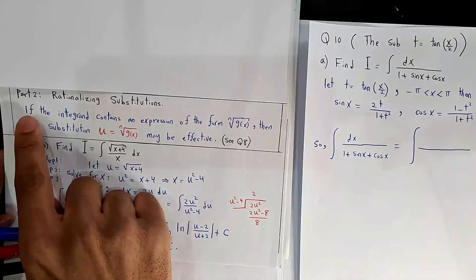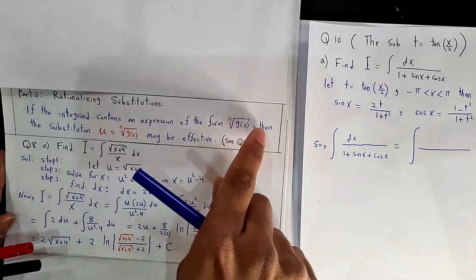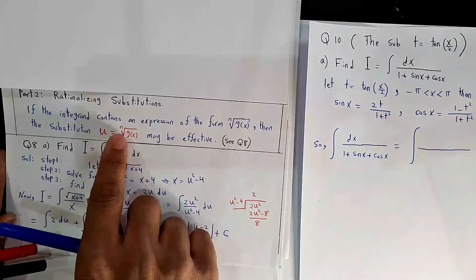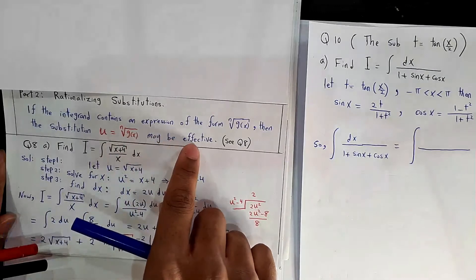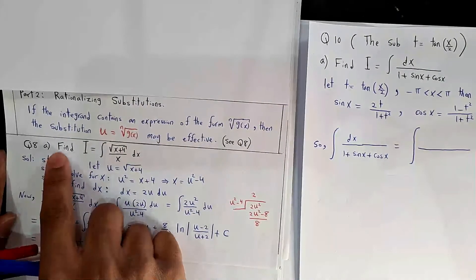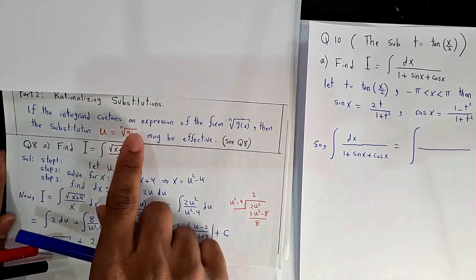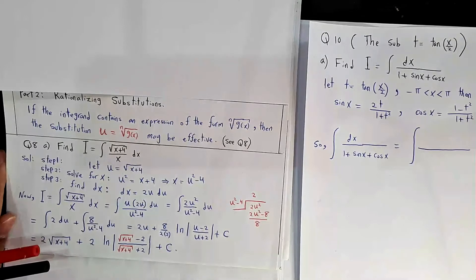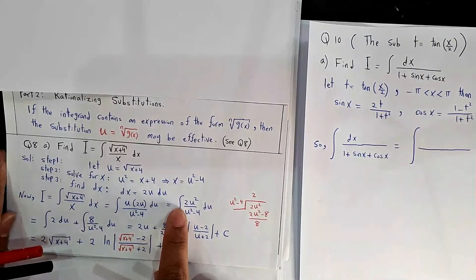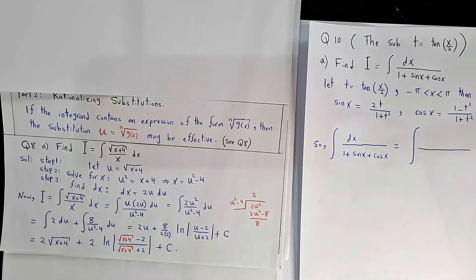If the integrand contains an expression of the form nth root of g(x), then the substitution u equal the nth root of g(x) may be effective — see question 8. For this example, we have a root, so it is recommended to take u equal root(x+4). If you do this, you will end up with an integral of a rational function. This is the reason for placing this exercise in section 7.4.